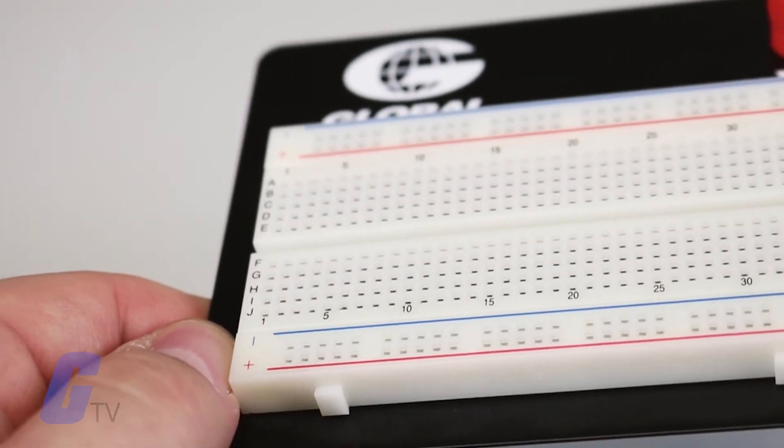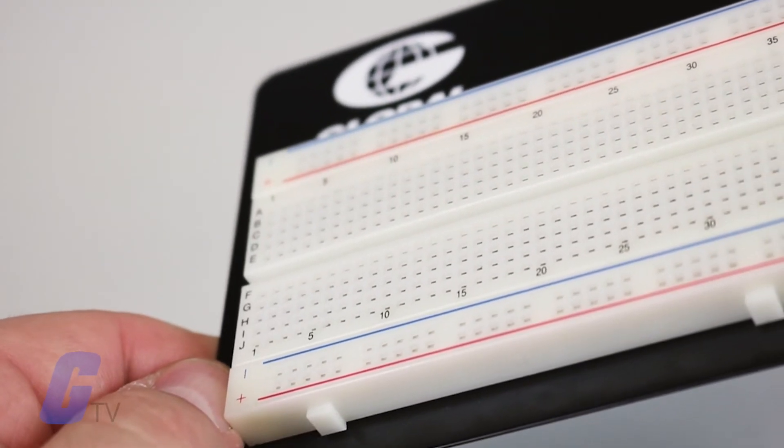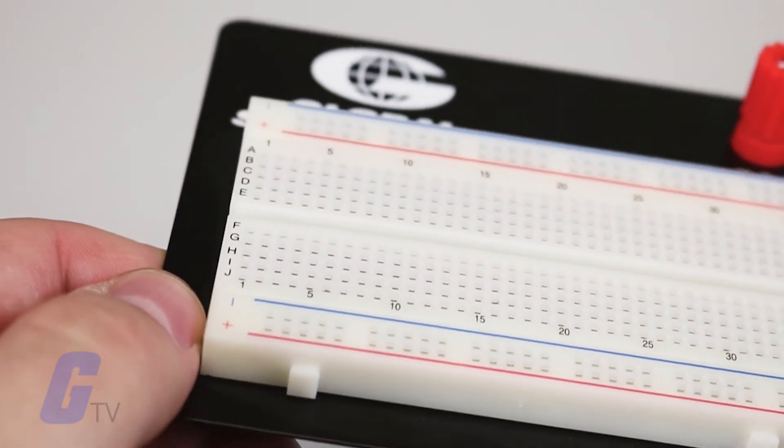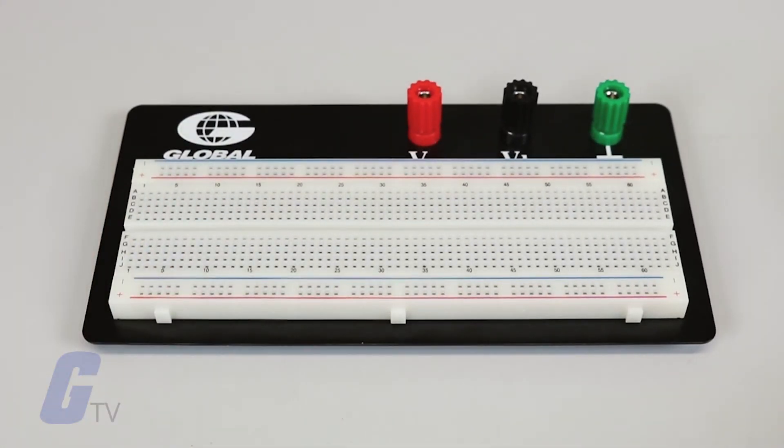When circuit directions refer to the positive bus, then it's referring to the strip of holes closer to the positive sideline. Similarly, the negative or ground bus refers to the strip of holes closer to the negative line.